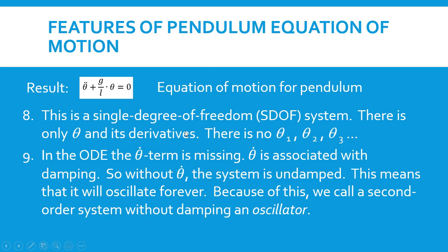There's no theta_1, theta_2, theta_3, which you would have in a more complicated system. I'll show later on a couple of examples of multiple degree of freedom systems so that we can compare and contrast those with this simple pendulum.